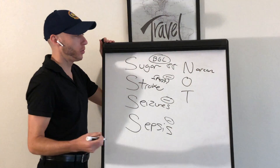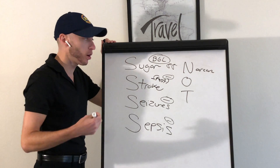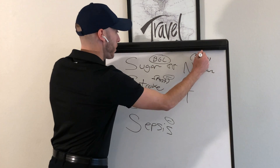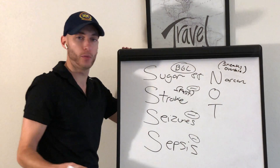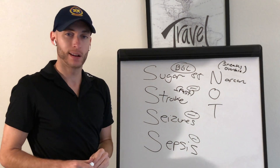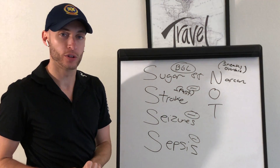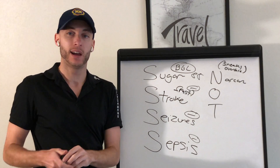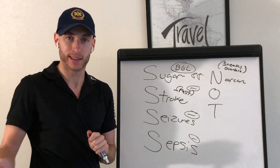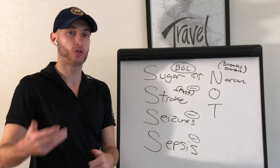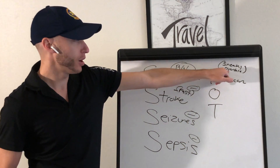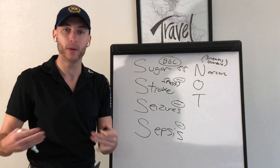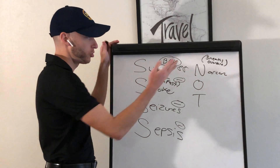N-O-T: N is for Narcan. That means — are we at a sneaky overdose? Not just an opiate overdose. When I say overdose, don't just think someone abusing heroin — there are accidental overdoses too. Check the med list; if it's a nursing home patient, did they get any new meds? Check the scene if they're out on the street — are we at a sneaky overdose or a poisoning event?